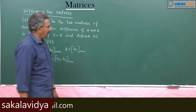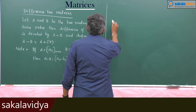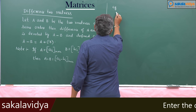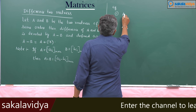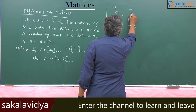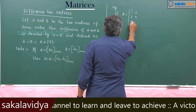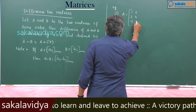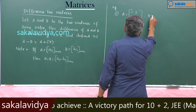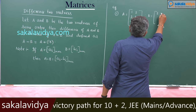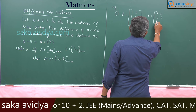Let us discuss one example. If A is equal to [1, 2, 3, 4, -2, 0] and B is equal to [2, 3, -2, 0, 1, 5].